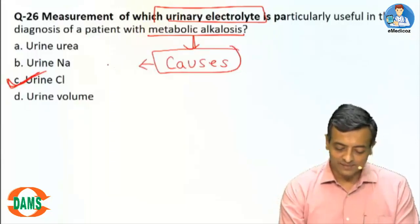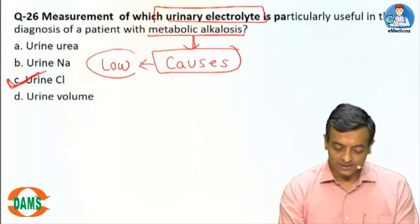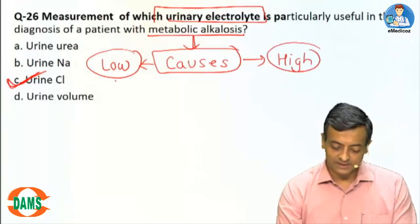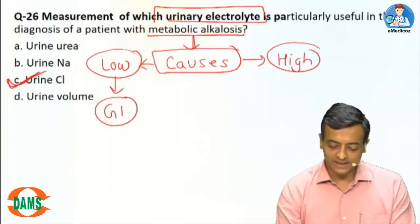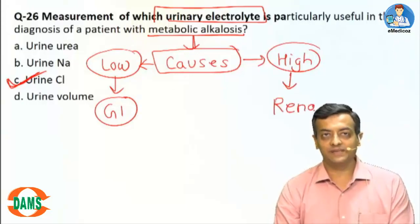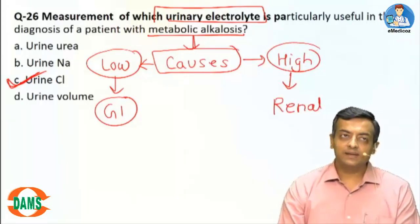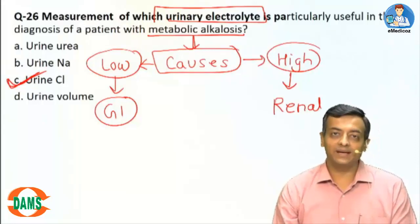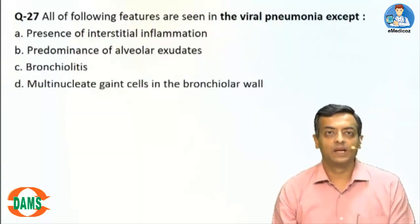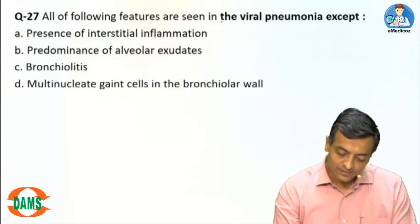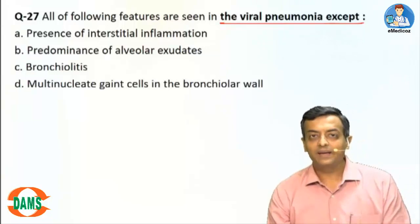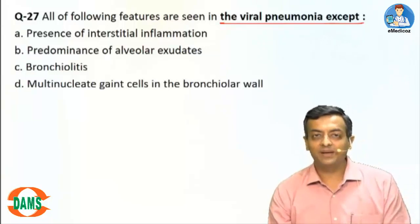If the urine chloride level is low or high, we can decide whether the patient has a GI-related problem or a renal cause of disease. That is why the correct answer is urine chloride level in patients with metabolic alkalosis.